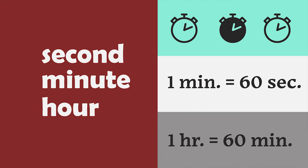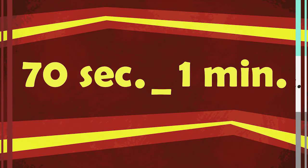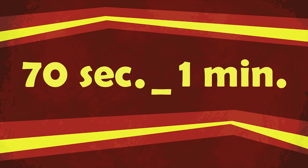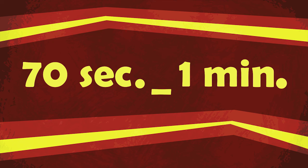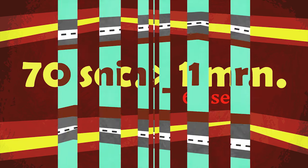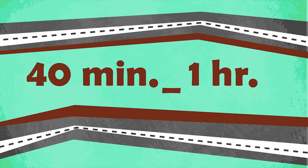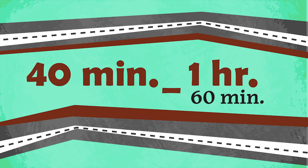Knowing how many seconds are in a minute or how many minutes are in an hour can help you compare amounts of time. For example, which is a greater amount of time: 70 seconds or 1 minute? Since 1 minute is 60 seconds and 60 is less than 70, 70 seconds is the greater amount of time. Which of these is greater: 40 minutes or 1 hour? Knowing that 1 hour is 60 minutes and 60 is greater than 40, you can easily say that 1 hour is the greater amount of time.